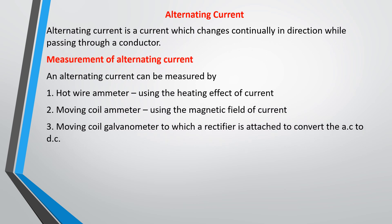Alternating current is a current which changes continually in direction as it passes through a conductor. There are instruments used to measure alternating current. One is the hot wire ammeter, which uses the heating effect of a current. Another is the moving coil ammeter, which uses the magnetic field of a current and a moving coil galvanometer to which a rectifier is attached to convert the AC to DC.